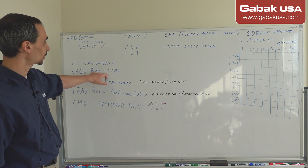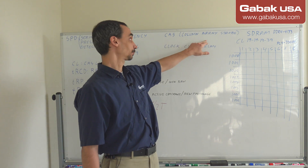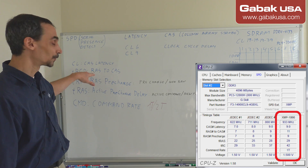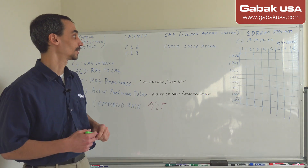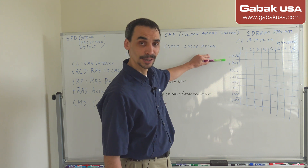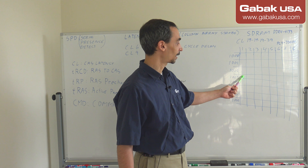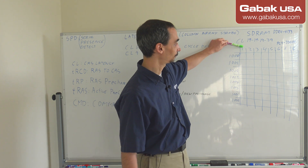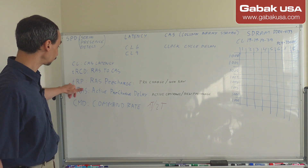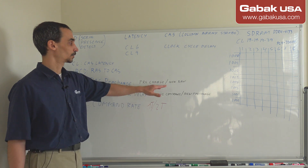The next latency is tRCD — RAS to CAS. CAS stands for Column Address Strobe and RAS stands for Row Address Strobe. This is the latency between finding the memory address — for example 1003 — and finding the specific cell, that is, the time between locating the column and the row.